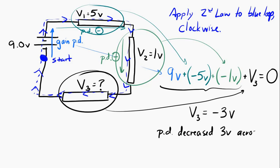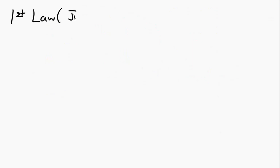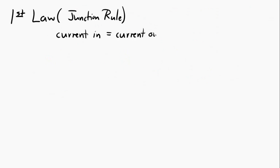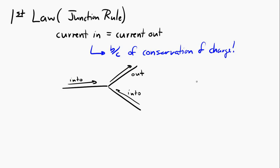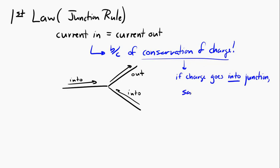Let's revisit the two laws. The junction rule — current into a junction equals current out — is really a consequence of conservation of charge. If more charge flowed in than out, charge would be destroyed at the junction. If more flowed out than in, charge would be created. Since you can't create or destroy charge, the first law comes directly from conservation of charge.